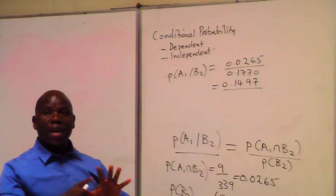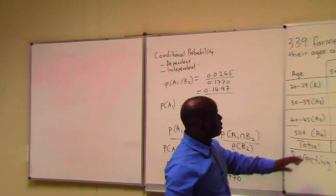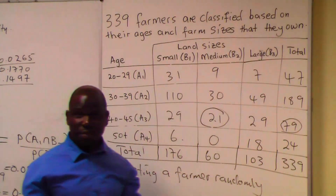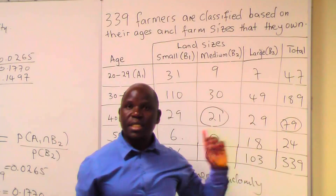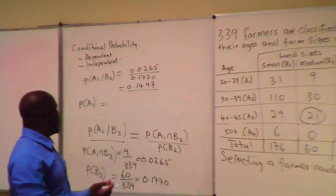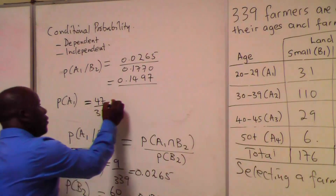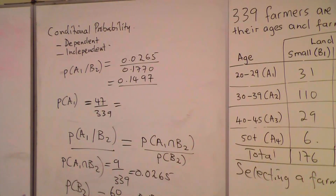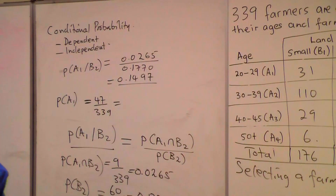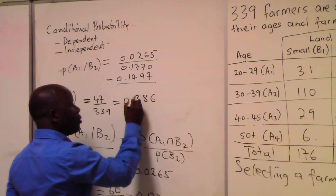Now, what is the probability of A1? The total for A1 is 47, so probability of A1 equals 47 over 339. Using the calculator: 47 divided by 339 gives us 0.1386.